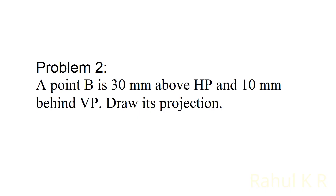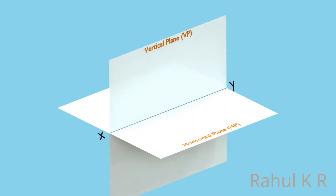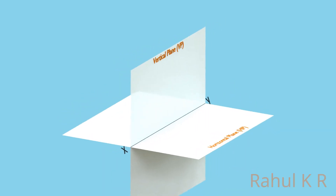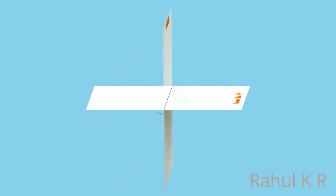Now let's solve another problem. A point B is 30 millimeters above HP and 10 millimeters behind VP. Draw its projection. Let's place this point B 30 millimeters above HP and at the same time 10 millimeters behind VP. That means the point is in the second quadrant.